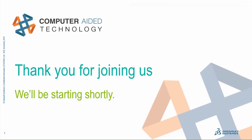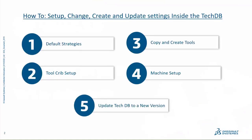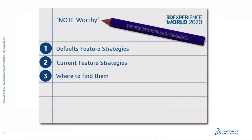What are we going to cover today? Default strategies, tool crib setup, copy and create some tools, machine setup, and update Tech DB to a new version. Throughout this hour we're going to go through some illustrations to help you understand a little bit about the Tech DB — how it works, how to get around it, how to make sure you have a backup, and how to bring in an old Tech DB when you load a new version.